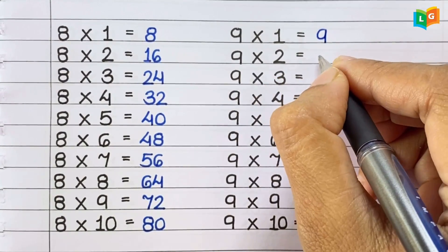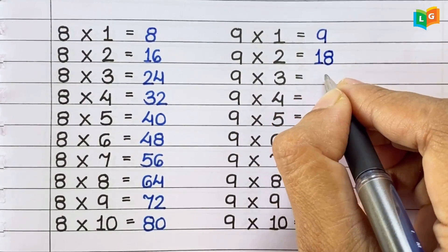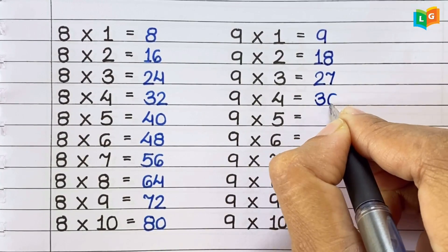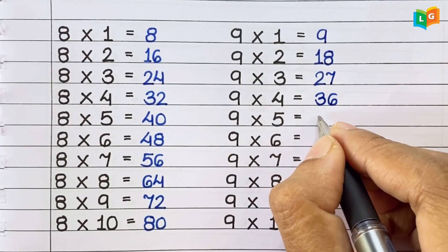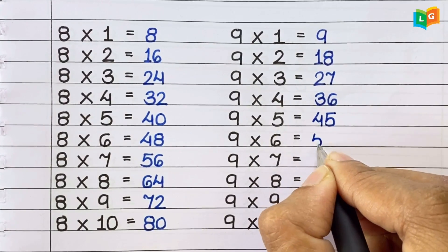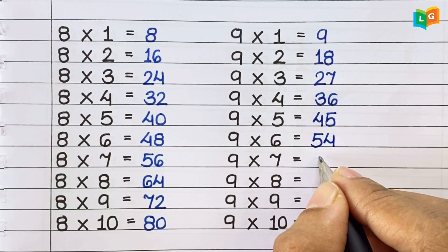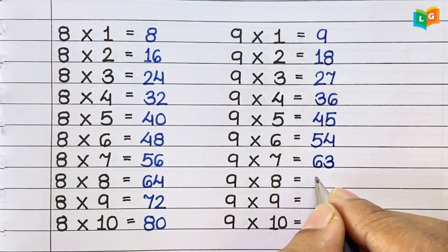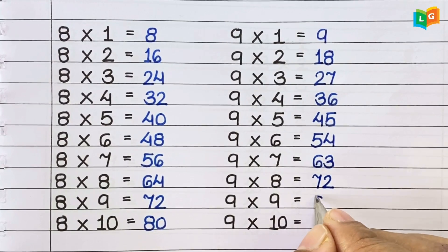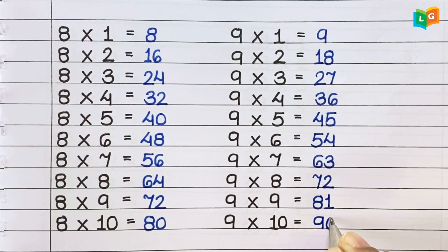Now let's see table of 9. 9 1s are 9, 9 2s are 18, 9 3s are 27, 9 4s are 36, 9 5s are 45, 9 6s are 54, 9 7s are 63, 9 8s are 72, 9 9s are 81, 9 10s are 90.